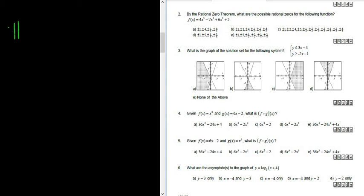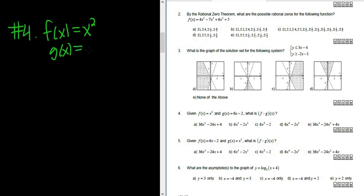Let's work out problem number four. We have two functions: f of x equals x squared, and g of x equals 6x minus 2. The question is, what is f of g of x? So we have to compute f∘g of x.